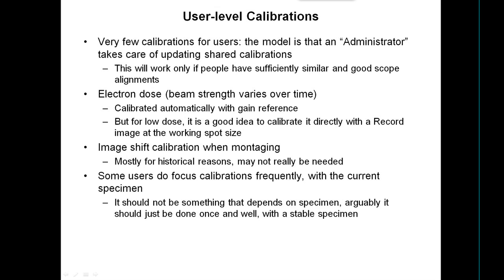Electron dose is something users must calibrate themselves, because beam strength varies over the course of hours and certainly from day to day. It does get partially auto-calibrated with the gain reference, but once you get to a spot size far away from that, you're relying on an indirect chain of inferences to estimate the dose. So it's a good idea to do a direct calibration at your working spot size for low dose.